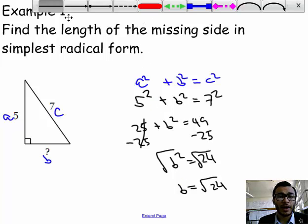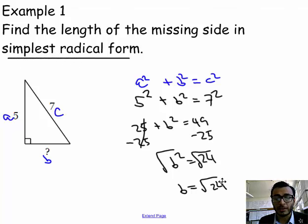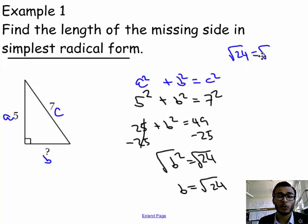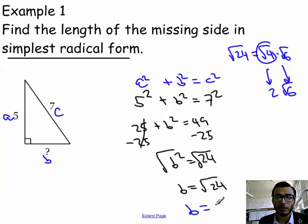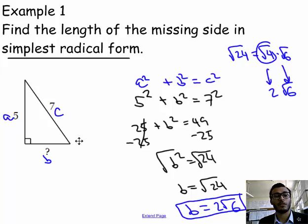Taking the square root of both sides, B equals the square root of 24. Remember, the answer has to be in simplest radical form, so we break down radical 24. The biggest perfect square that goes into 24 is 4, so radical 4 times radical 6 equals radical 24. Radical 4 becomes 2, and we bring down the radical 6. So B equals 2 radical 6 in simplest form — that's our final answer.